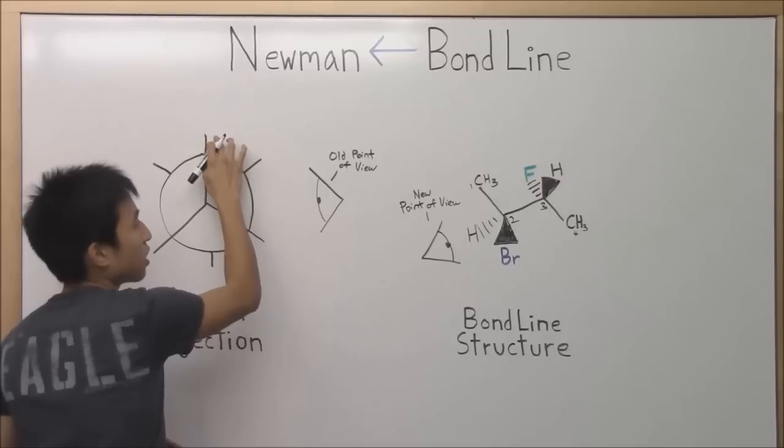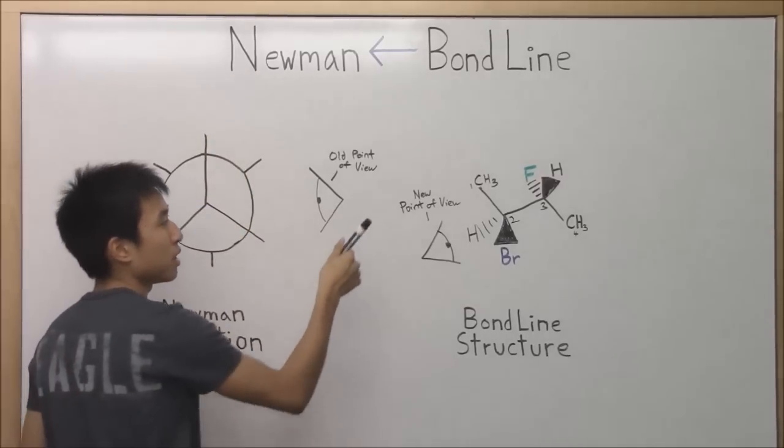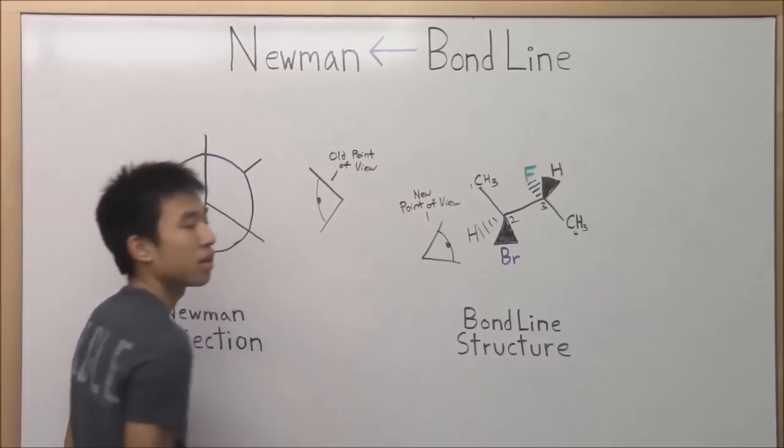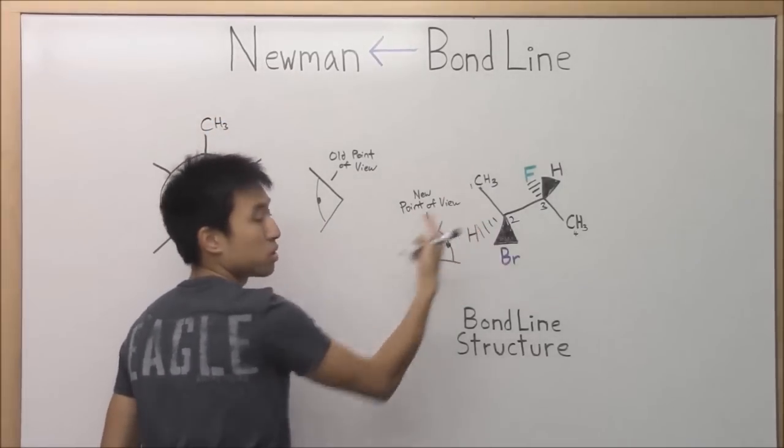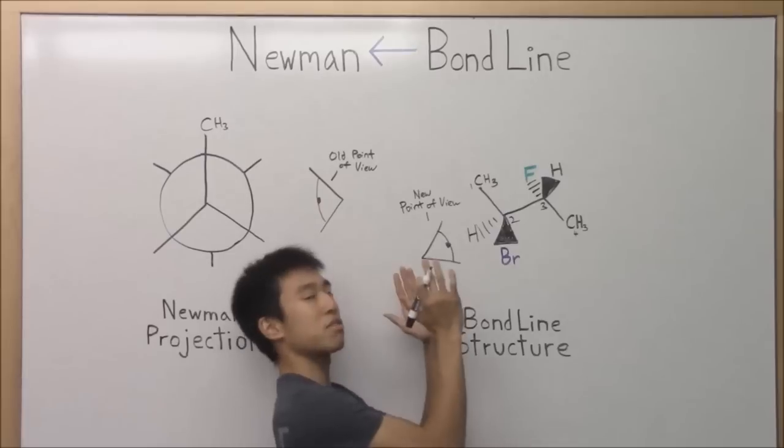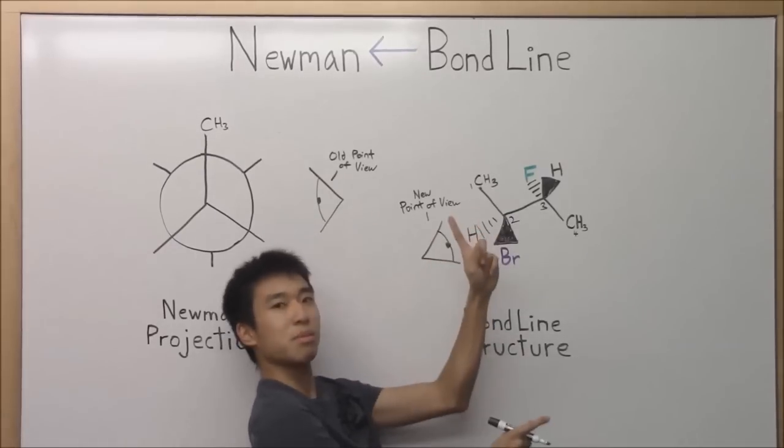So they're definitely not wedges and dashes. So this one here, what will it be? Will it be this guy or that guy? Well, it would be CH3, the one on the front carbon, or carbon two, because if you look, if you put your head over here and look, there's the methyl group.